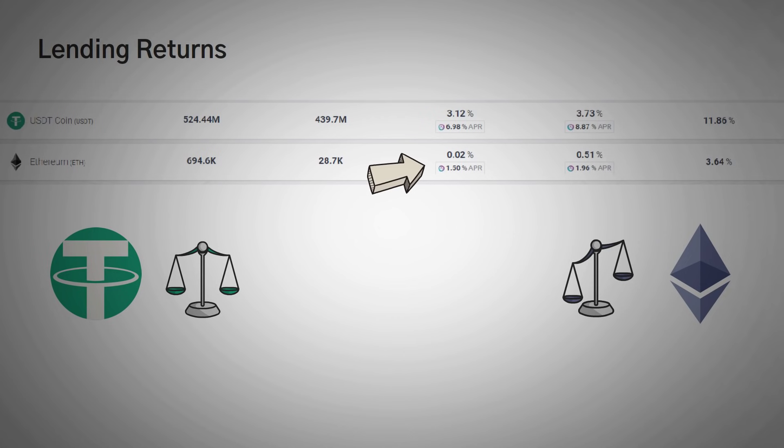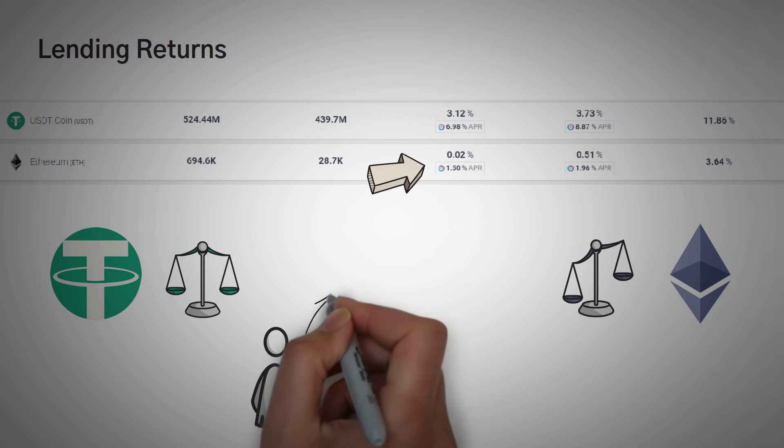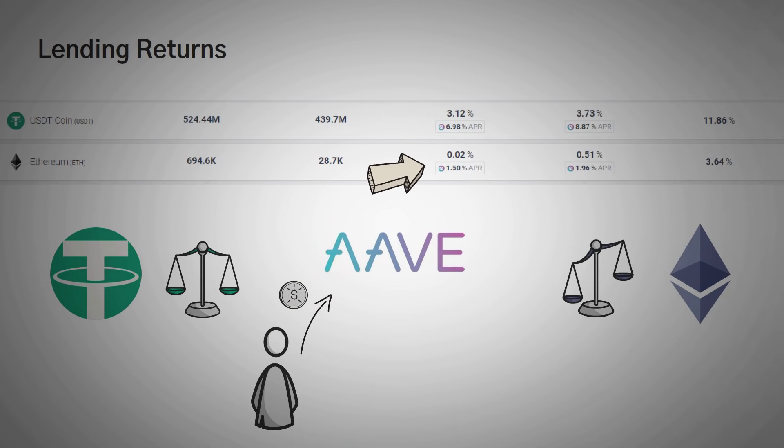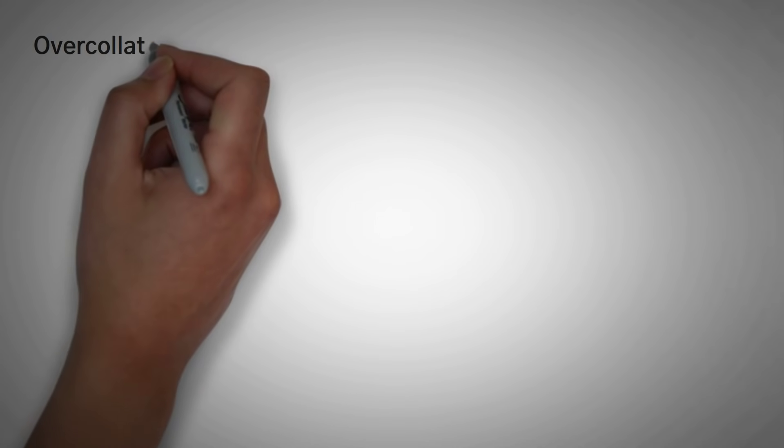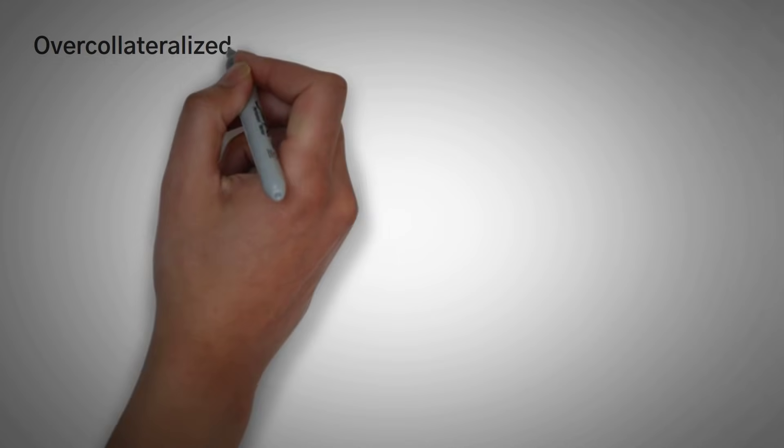So with lending comes borrowing. And so how this works is you lend your crypto to Aave and they pay you interest on it. We won't get into the technicals of how that actually works though. However, with lending comes borrowing. So after you deposit some of your crypto to Aave to earn interest, you can also decide to borrow against it.